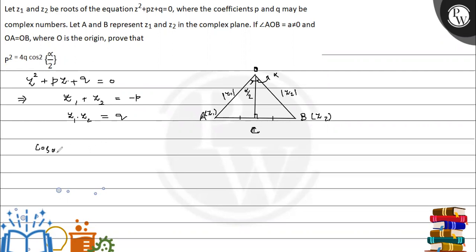Now I define cosine of alpha upon 2 in triangle ACO. So what we will get is cosine of alpha upon 2 is